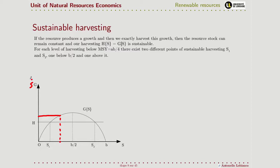And in particular, for each level of harvesting that is below the maximum, we'll have two different points of sustainable harvesting. In this case, in this chart, S1 and S2. What's the difference between them?